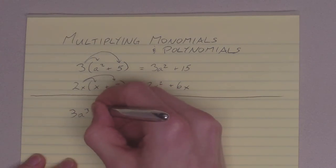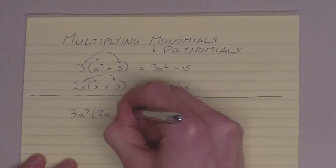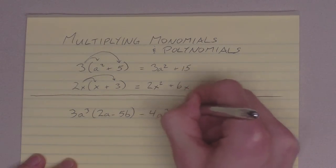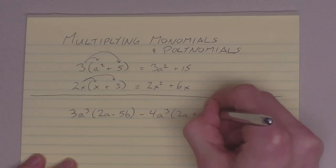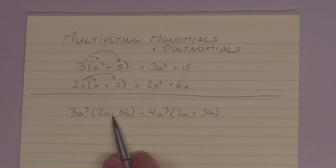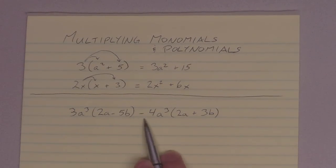Alright, let's try this guy here. Lots of ugly stuff. 3a cubed times 2a minus 5b minus 4a cubed times 2a plus 3b.